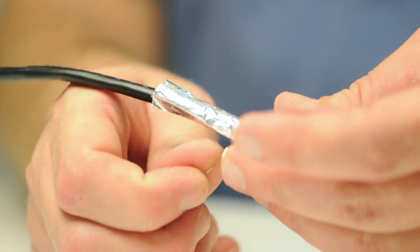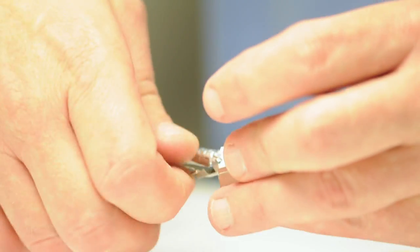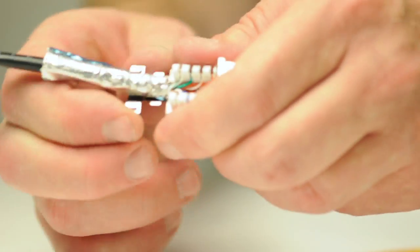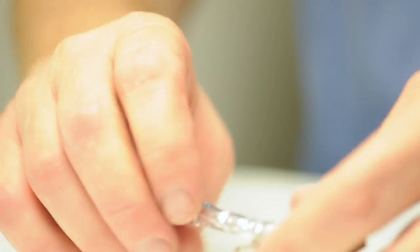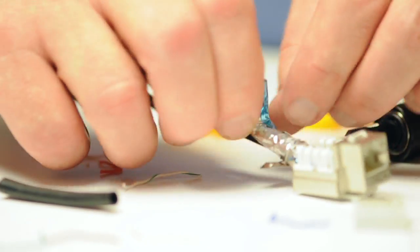The next step is to take the drain wire and wrap it around the foil and metal of the jack. Folding back the foil ensures a shielded connection.